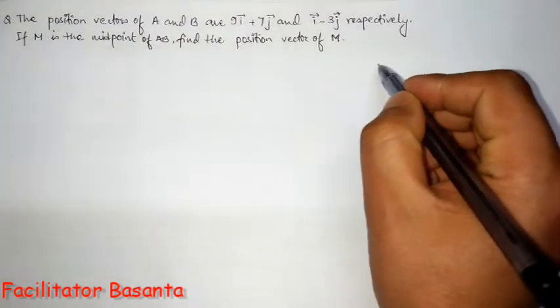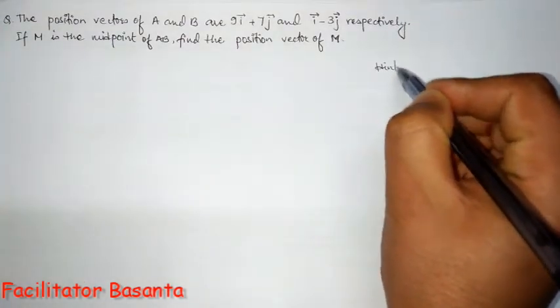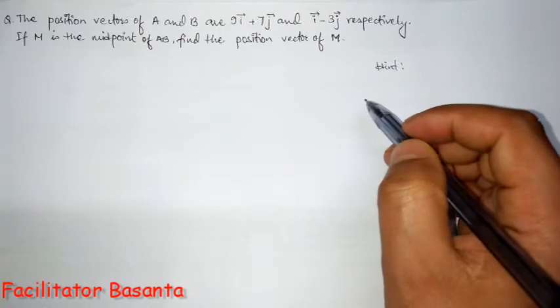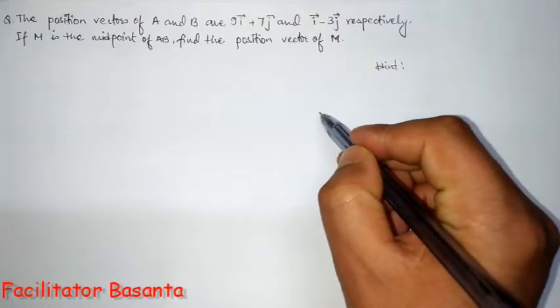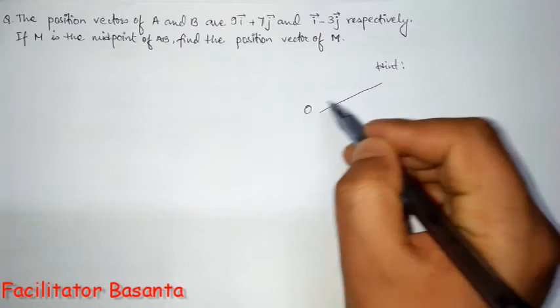First, for the hint, we draw a figure. It will be easy for us. It means position vector - the starting point is the origin.